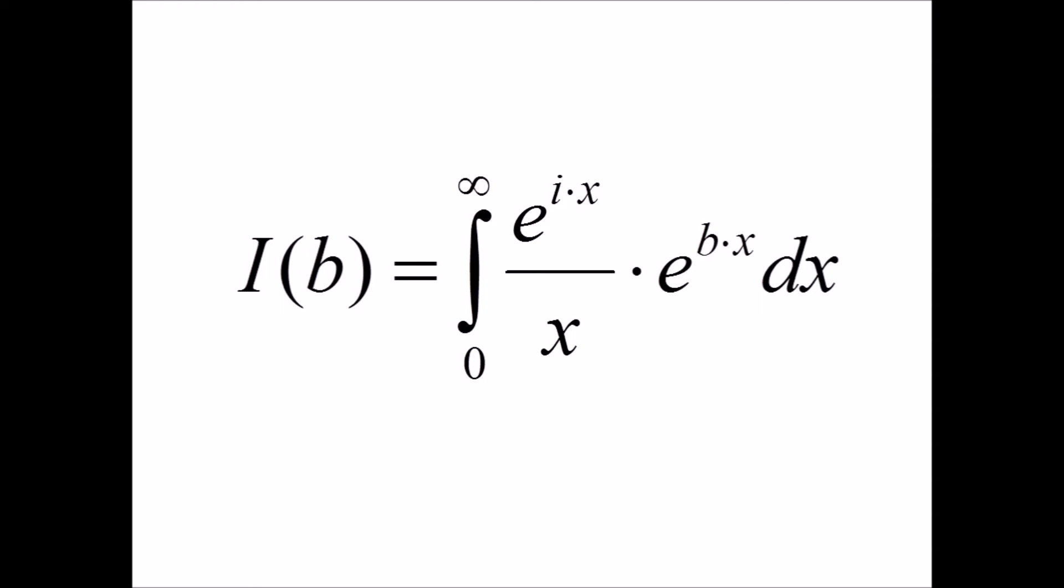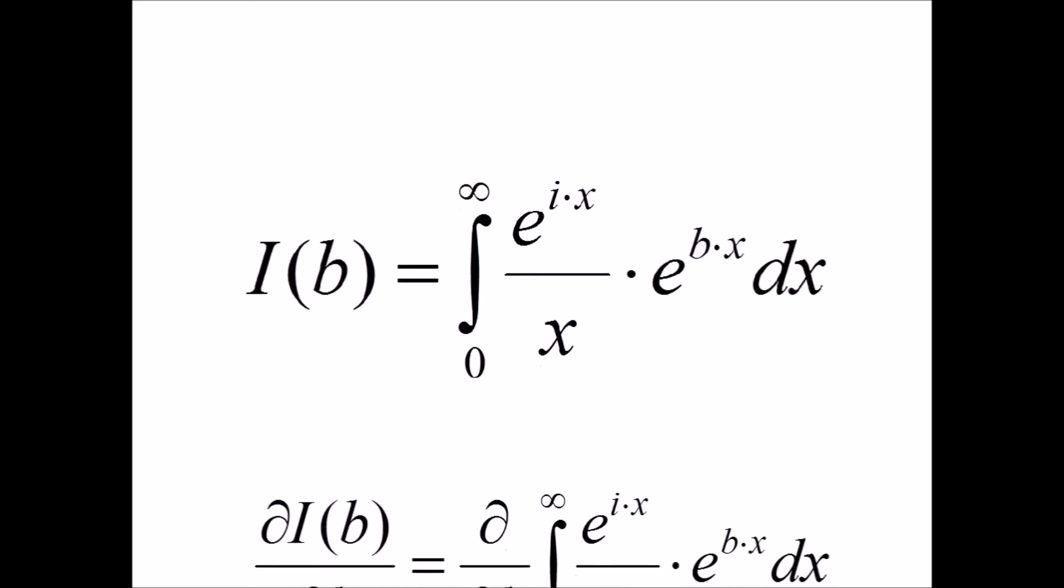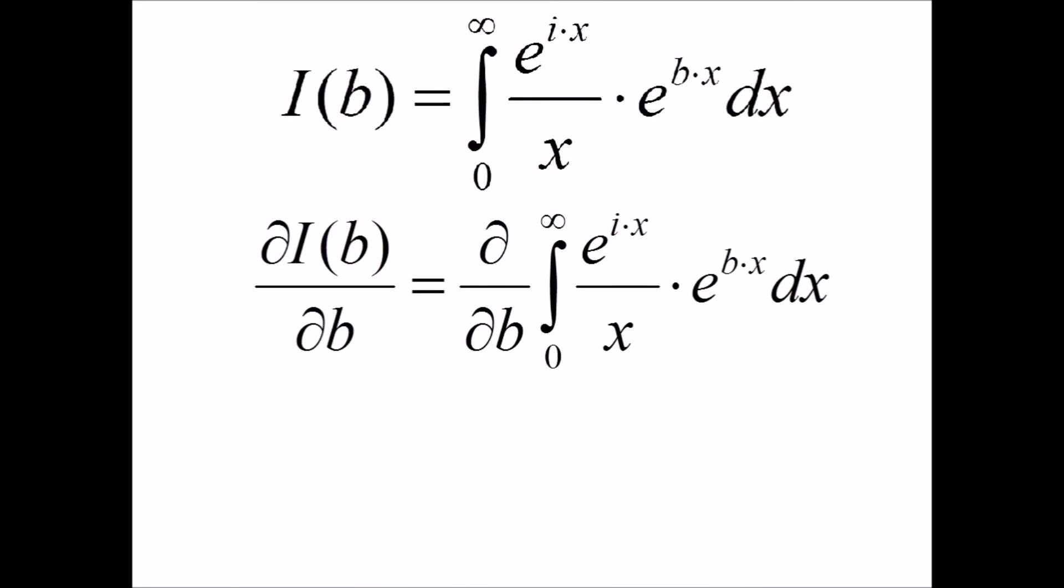i of b is very integrable. As long as we take the partial derivative, we'll eliminate that denominator and be able to integrate it. We see that the denominator goes away, and if we combine the exponentials, we get something that is very easy to integrate.